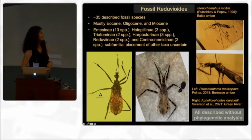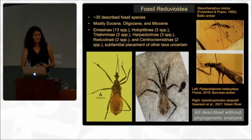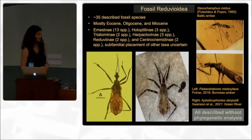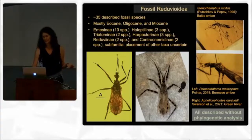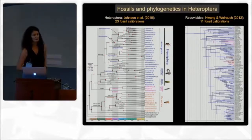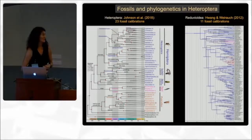Even very recently described species such as this one, described last year from the Green River formation, have not been included in phylogenetic analysis to actually phylogenetically place them and then inform the classification. But having said that, people have of course, in true bugs and also in Reduviidae specifically, used and integrated fossils into analyses. This has typically been done in terms of building big molecular phylogenies and then using fossil species as calibration points to estimate divergence dates.